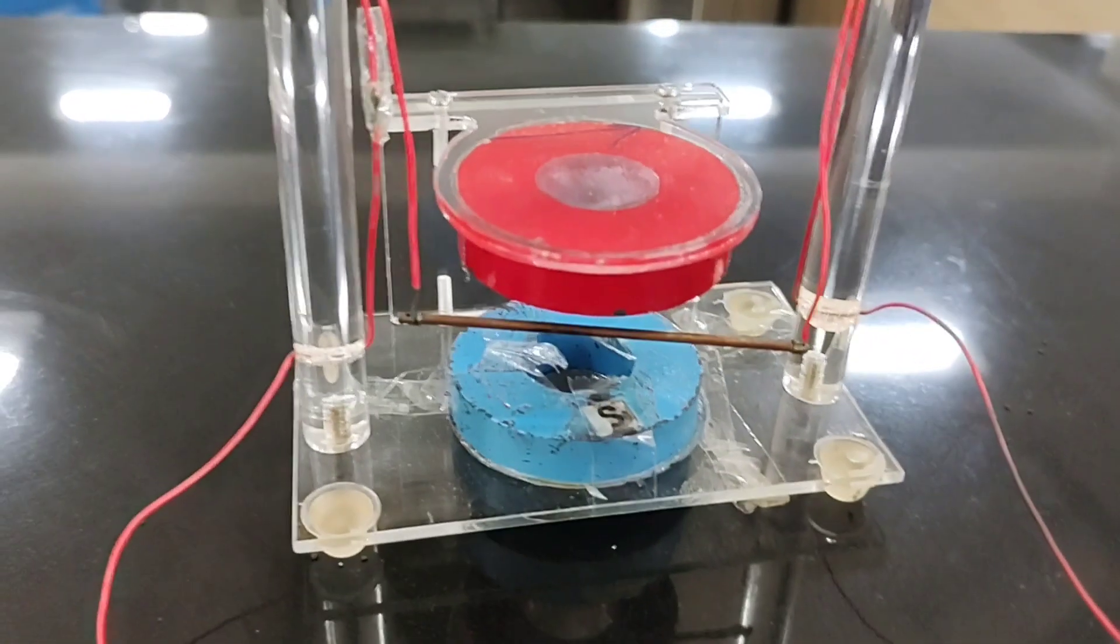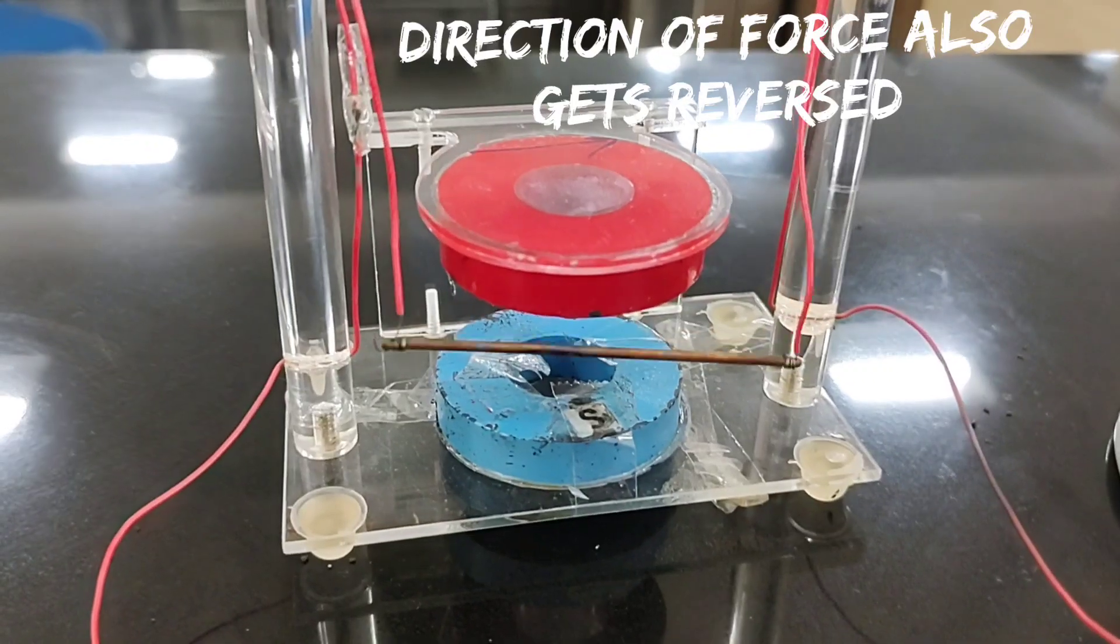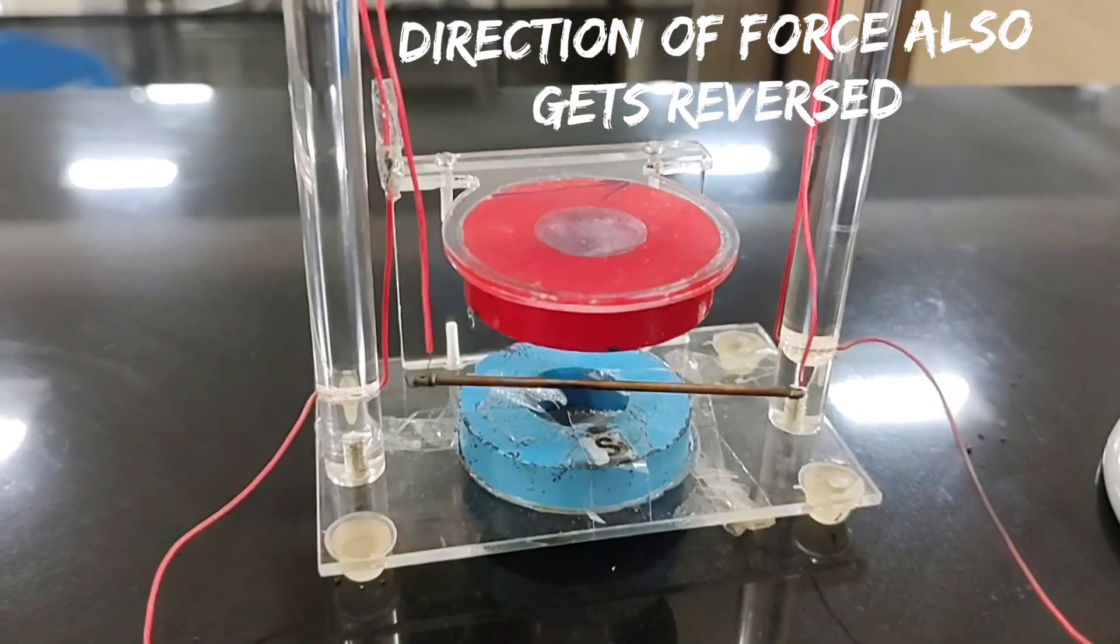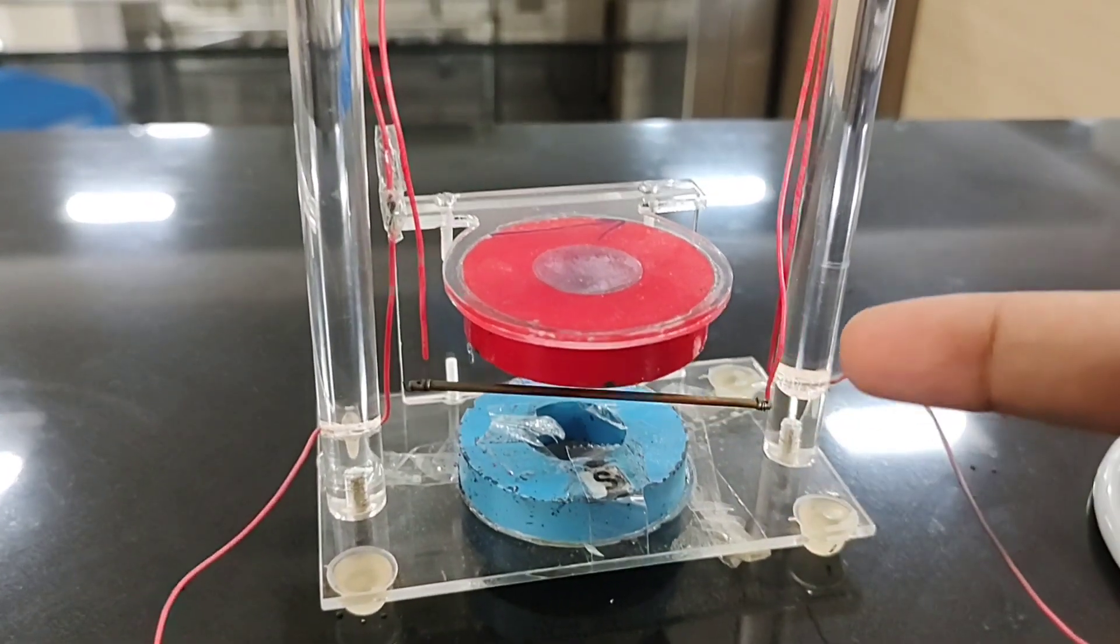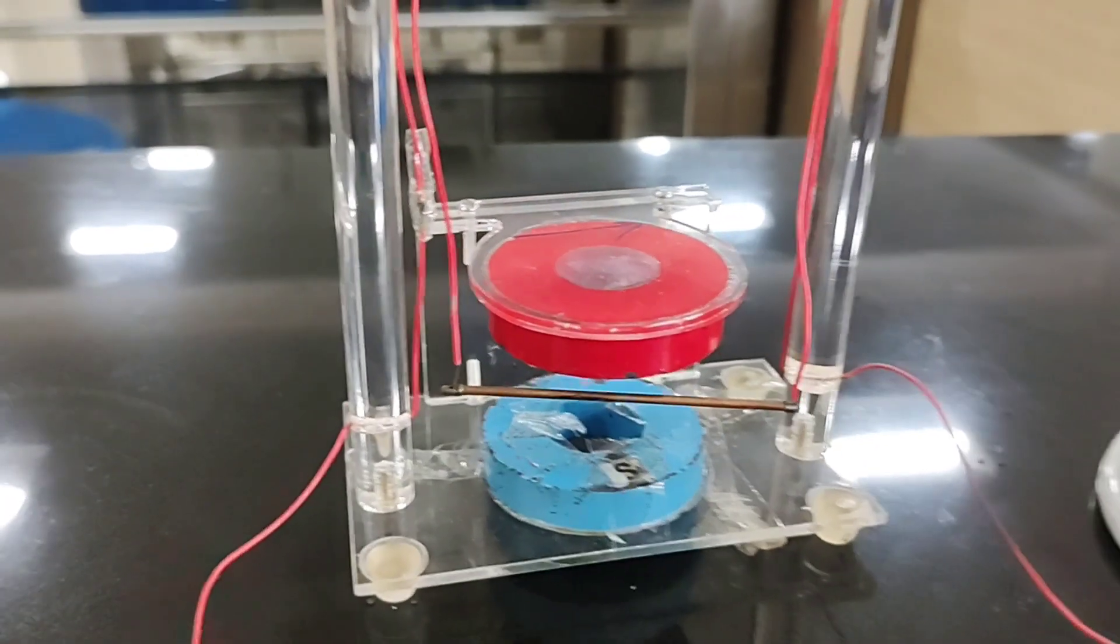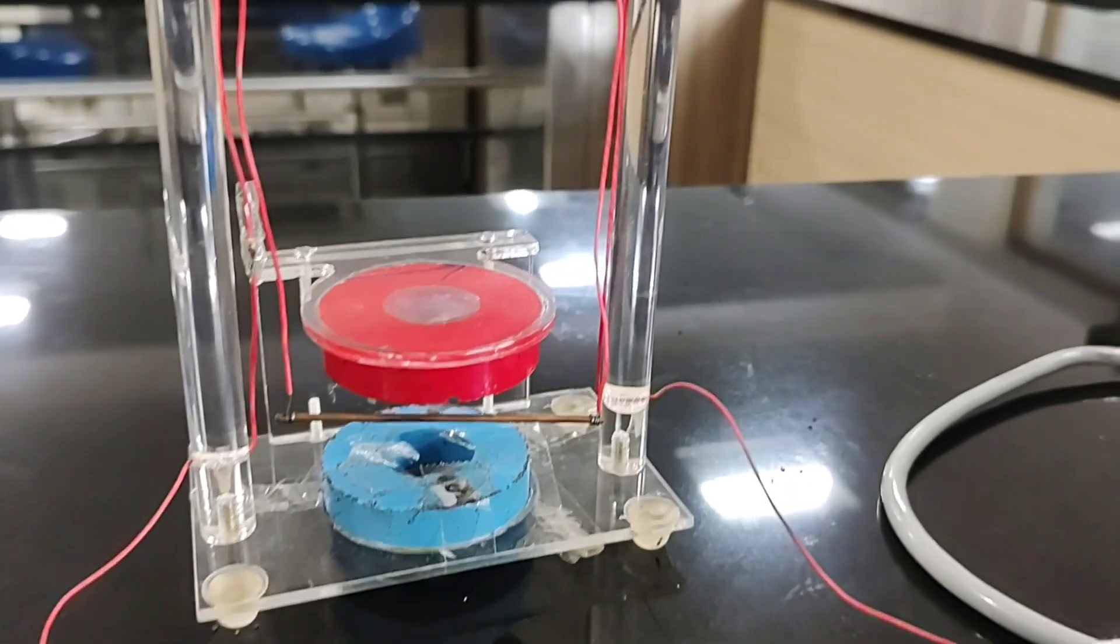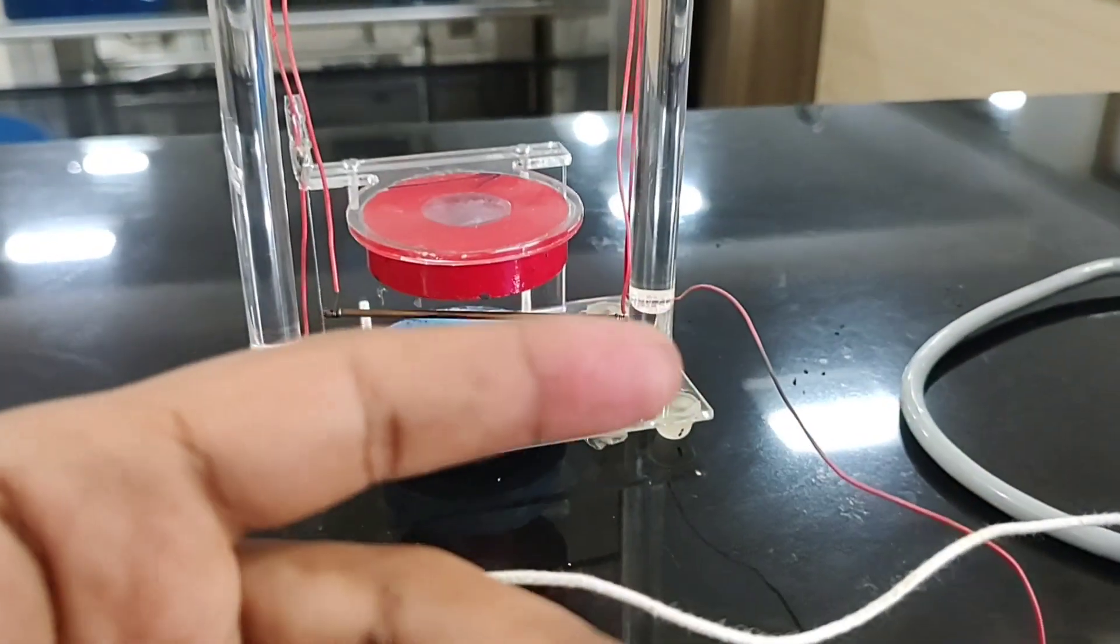See, it is deflecting backward now. It is deflecting backward, that means into the plane. So again when we apply Fleming's left hand rule by stretching the three fingers of the left hand.